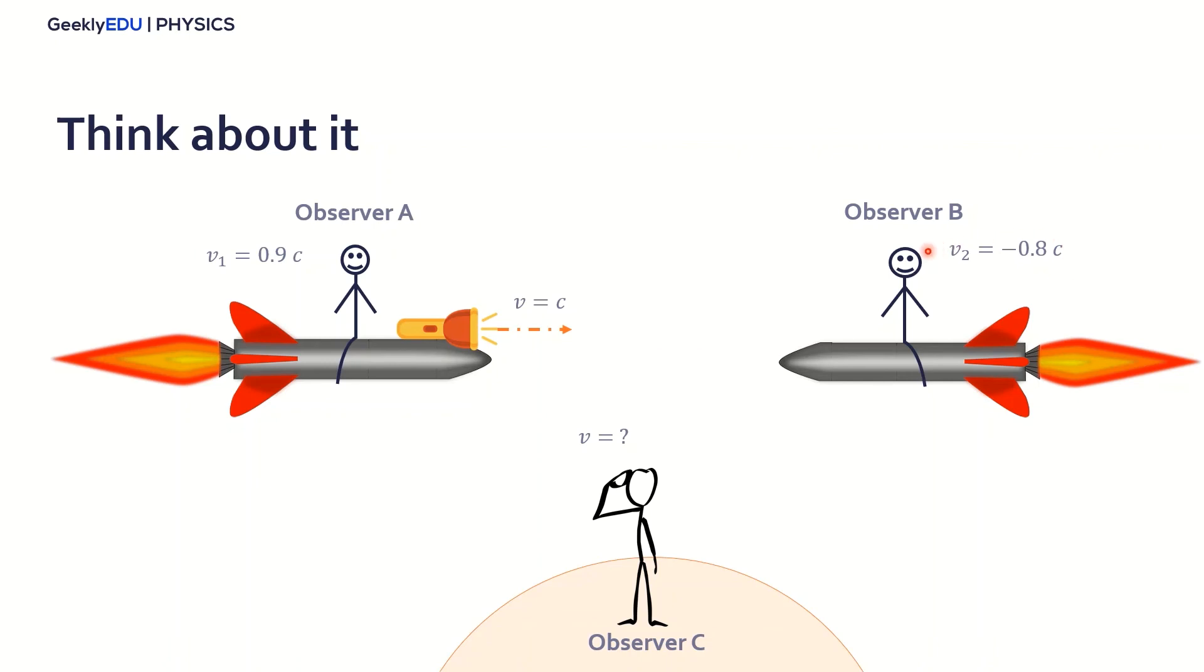Now, here's a situation for you guys to think about. We have three observers, A, B, and C. Observer A is traveling on top of this rocket here at 0.9 times the speed of light, and is flashing a light towards observer B. Now, observer B is going the opposite direction at 0.8 times the speed of light. So I want you to think what would be the speed of the light for the three observers A, B, and C. Think about Einstein's postulates we've seen in this lesson. And write your answers in the comments section. See you later.